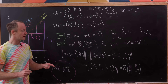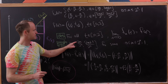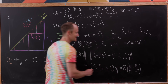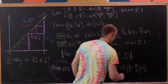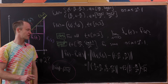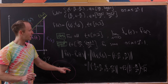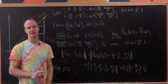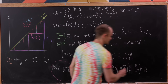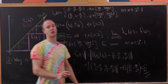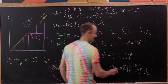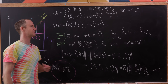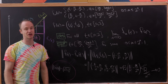So as n approaches infinity, √2/2ⁿ approaches 0, and this length approaching 0 is the same as fₙ converging to f(t). So we've shown that the limit of fₙ(t) is f(t) for all t in [0, 2].